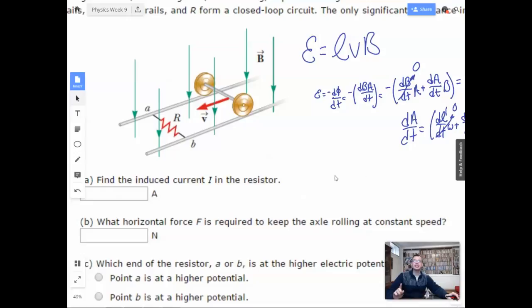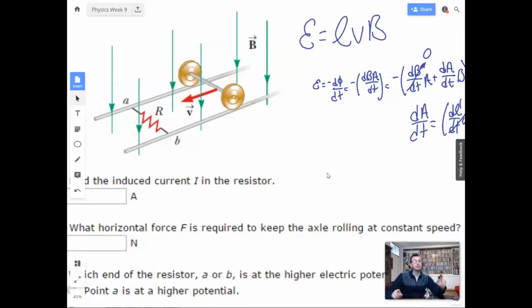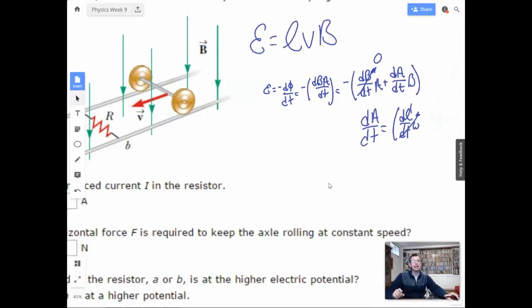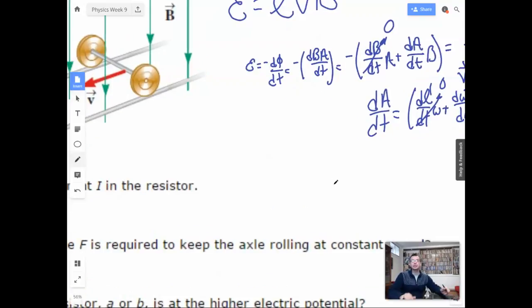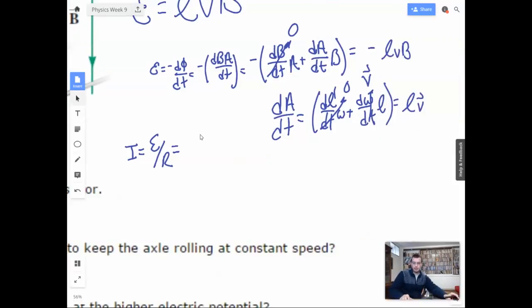And that's where this everybody loves velvet bunnies equation comes from. So that's going to give us the induced voltage. Induced voltage is then going to create an induced current. So induced current, we have current equals V, or in this case, ε for induced electromotive force. So this is going to be LVB over R.